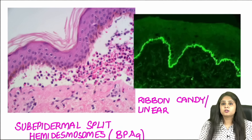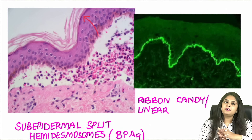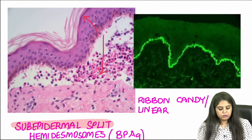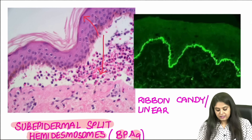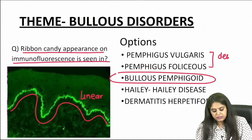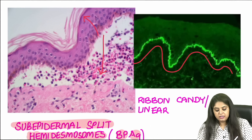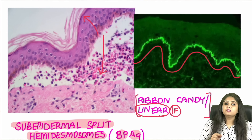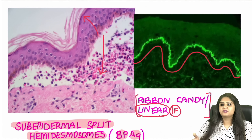In bullous pemphigoid, the histopathology shows a subepidermal split — the entire epidermis splits off — because bullous pemphigoid antigen, which is a type of hemidesmosome, is affected. So in pemphigus it is desmosomes and desmoglein that are affected, while in bullous pemphigoid it is hemidesmosomes. The ribbon candy or linear pattern is the immunofluorescence finding. Second homework: a similar linear pattern on immunofluorescence is seen in a kidney disorder — specifically RPGN — so tell me which type of RPGN (type 1, 2, or 3) shows this linear pattern.